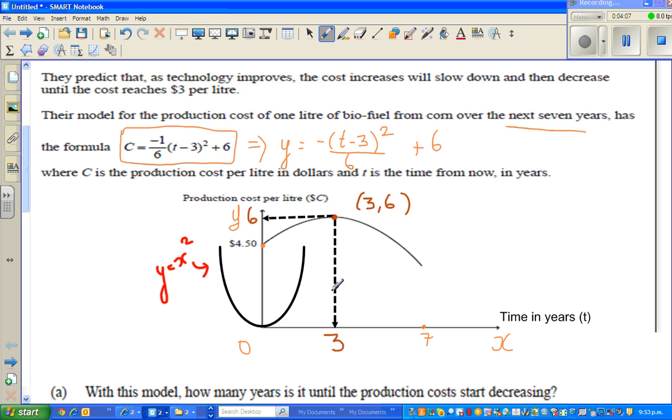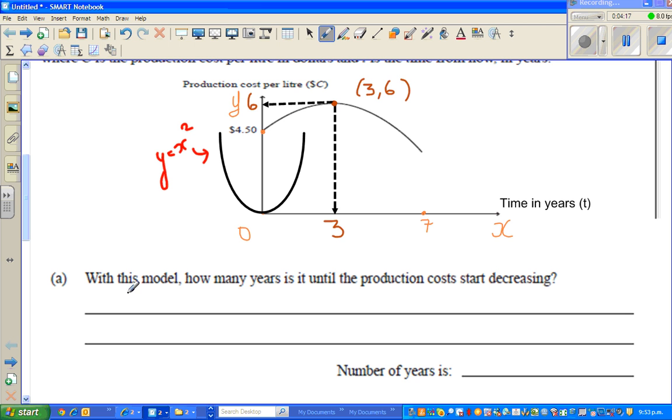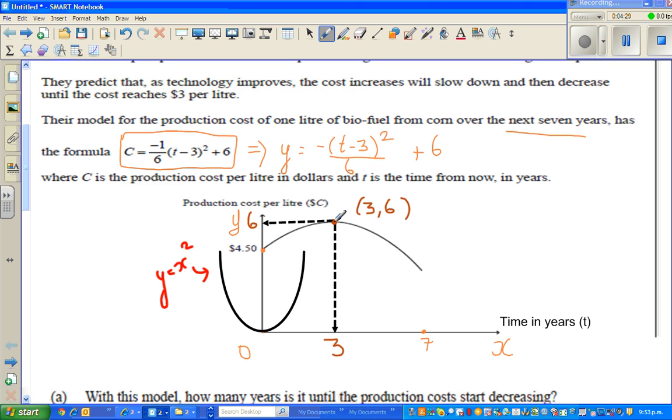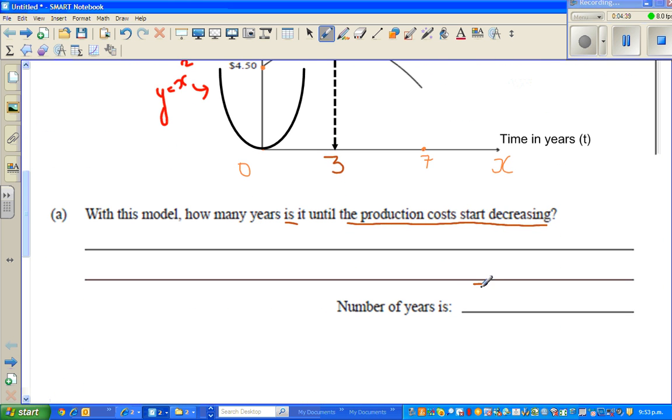So in other words, what is this point telling me? After 3 years, the cost of production was 6 dollars. And let's read the question. With this model, how many years is it until the production cost starts decreasing? So if you look at the parabola, after this point, the cost is decreasing. So I can say after 3 years, the cost would decrease. So the answer is 3 years. So the number of years is 3.